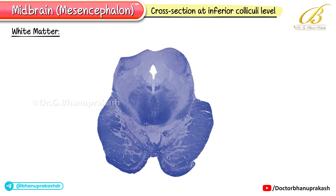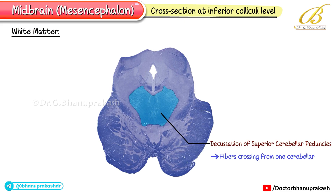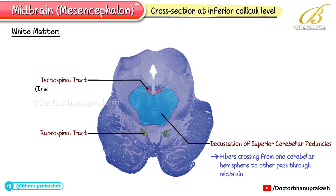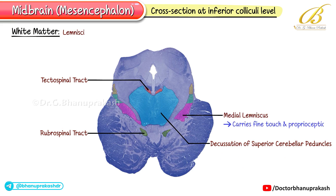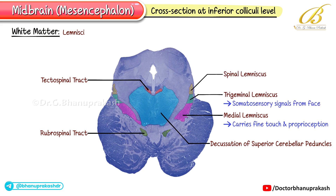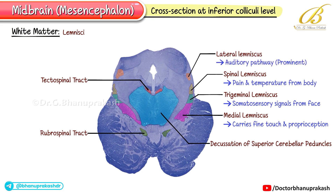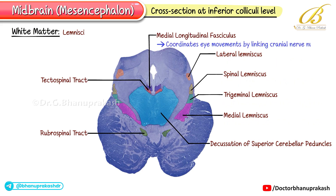Now the white matter at the inferior colliculus level: first, the decussation of the superior cerebellar peduncles, where fibers cross from one cerebellar hemisphere to the other. Second, tectospinal and rubrospinal tracts — motor pathways involved in reflexive head and neck movements (tectospinal) and fine motor control (rubrospinal). Third, the lemnisci, sensory bundles arranged in a curve: medial lemniscus carries fine touch and proprioception; trigeminal lemniscus carries somatosensory signals from the face; spinal lemniscus carries pain and temperature from the body; and lateral lemniscus is the auditory pathway, especially prominent at the inferior colliculus level. Fourth, the medial longitudinal fasciculus (MLF) coordinates eye movements by linking cranial nerve nuclei.